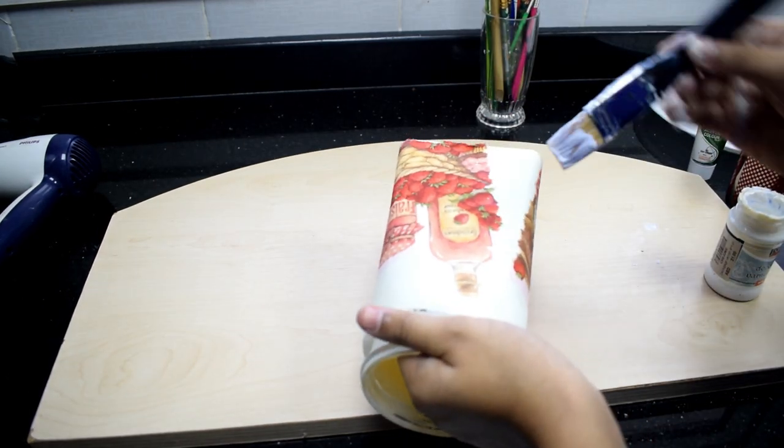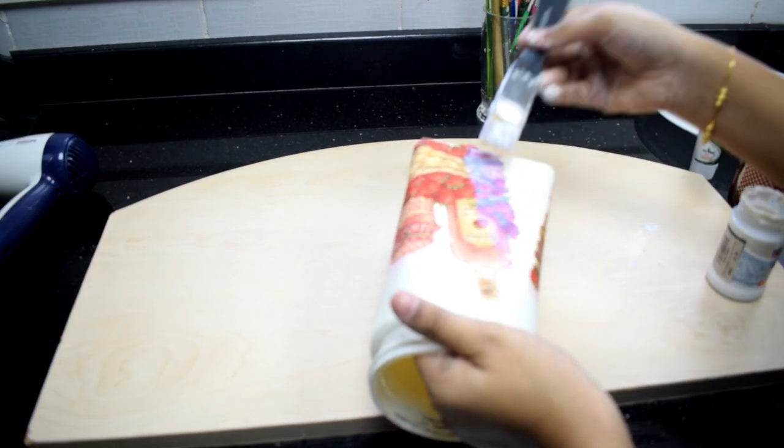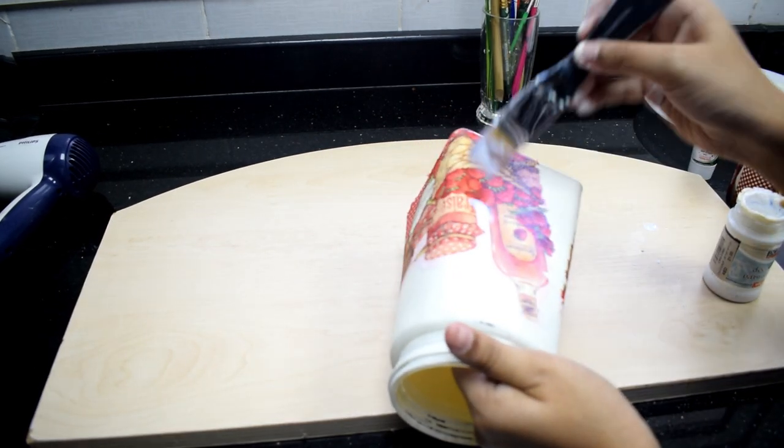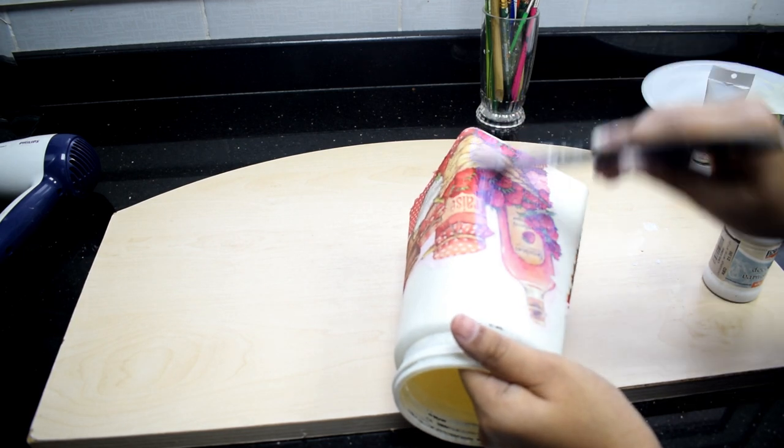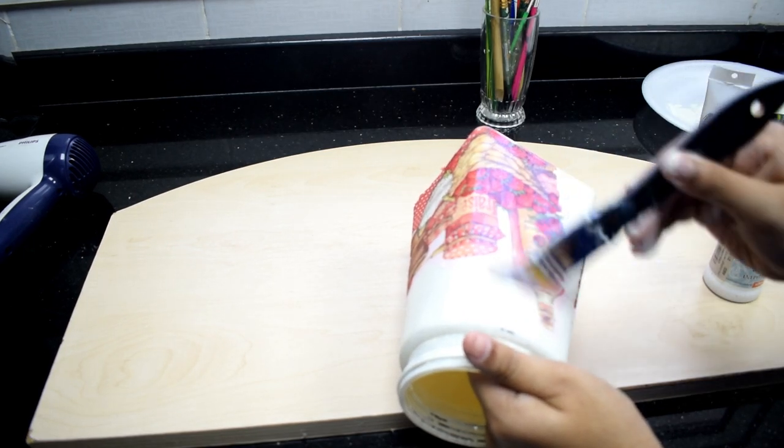Whatever design you have with you, you can either decoupage the whole bottle with the same design or you can place it in the center. Apply glue varnish on the surface of the bottle.